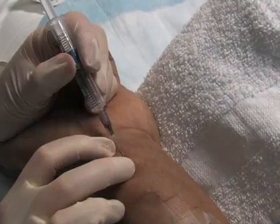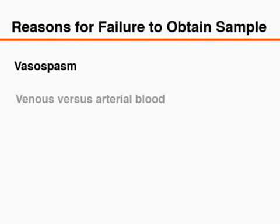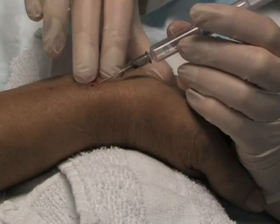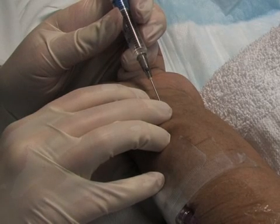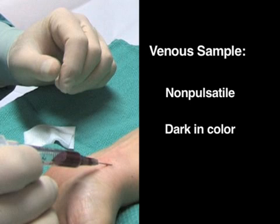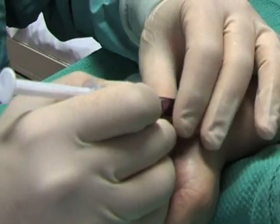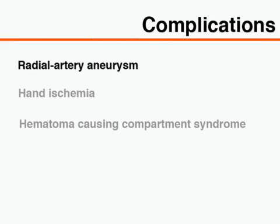The most common technical difficulty associated with radial arterial puncture for arterial blood gas analysis is failure to obtain a blood sample because of vasospasm, or obtaining venous instead of arterial blood. If vasospasm is suspected, abort the procedure and re-attempt it on the other wrist. A blood sample is likely to be venous if it is non-pulsatile and dark in colour and flows slowly. It should be noted, however, that very deoxygenated blood in a patient with hypoxemia could also appear dark, even though it is arterial. Serious vascular complications are rare and include radial arterial aneurysm, hand ischemia, and hematoma-causing compartment syndrome.